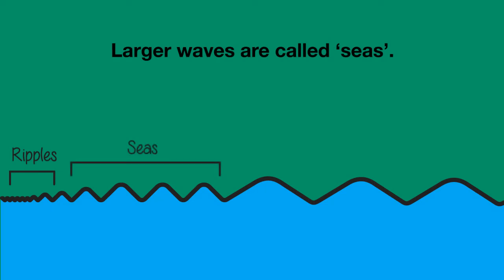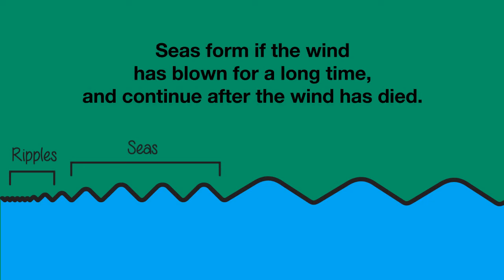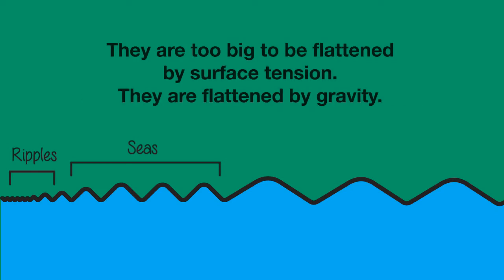Larger waves are called seas — yes, this sounds a little bit confusing. Seas form if the wind has blown for a long time and they continue after the wind has died. They are too big to be flattened by the surface tension of the water; they are flattened by gravity.